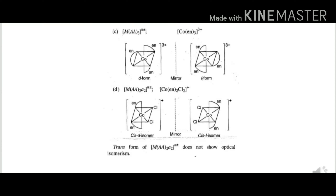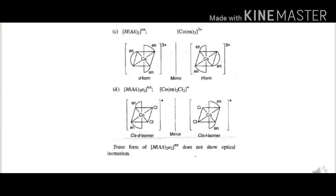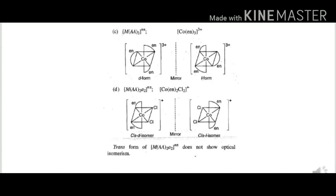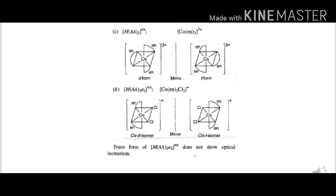The trans form of MAA2B2 does not show optical isomerism. This is because its mirror image is superimposable — it has a plane of symmetry. If there is a plane of symmetry, the compound will not rotate polarized light in either direction, making it optically inactive.